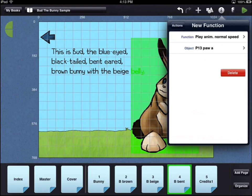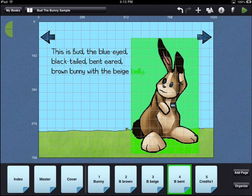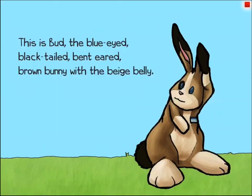To dismiss the inspector menu, touch the workbench area. To test the animations, touch the green preview icon in the top right corner of the workbench area. When the user touches the bunny, both animations play through once.